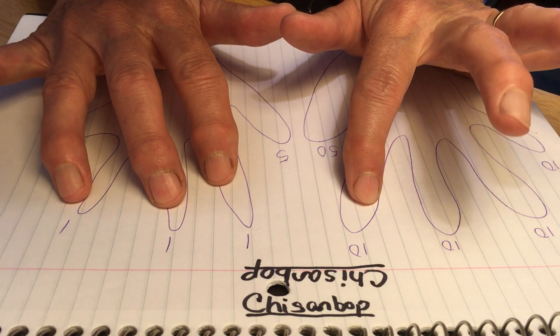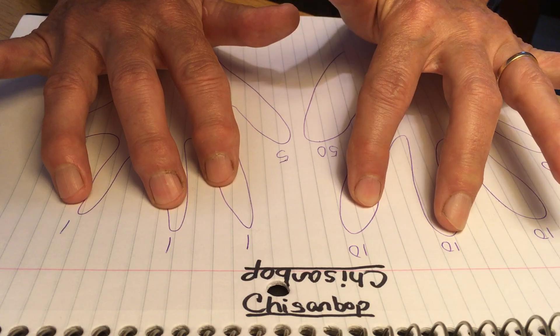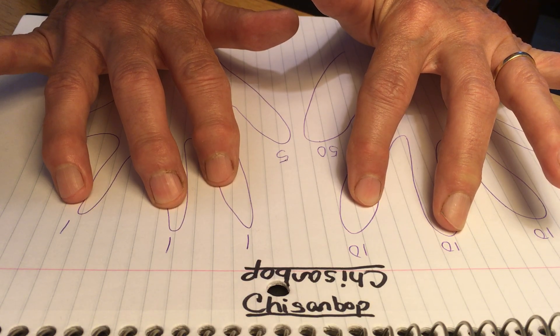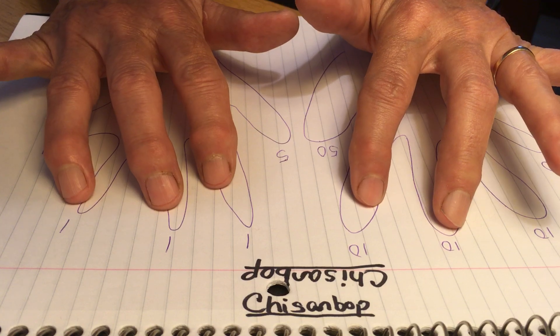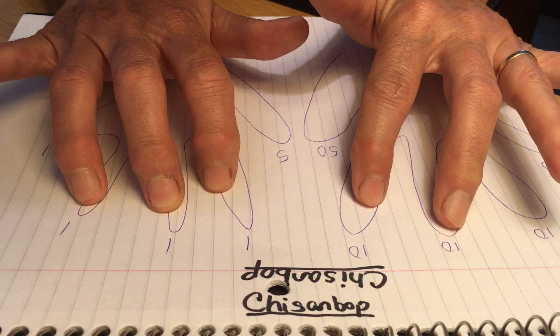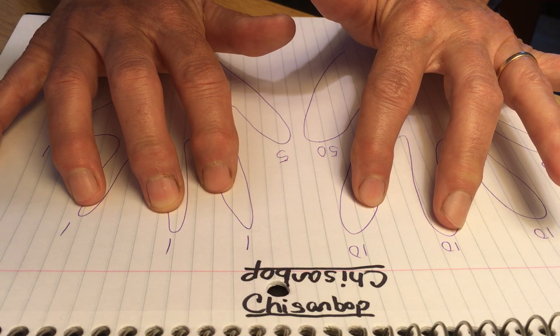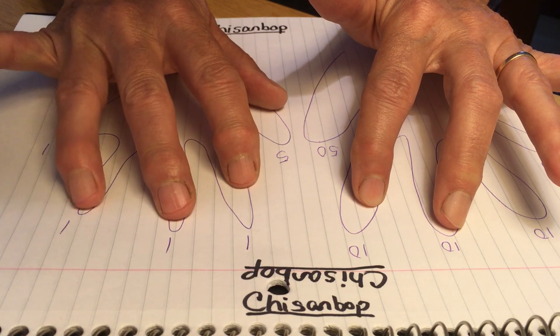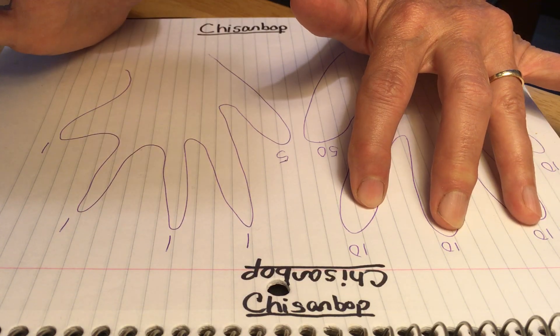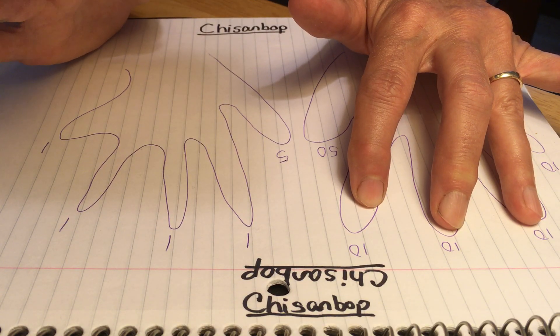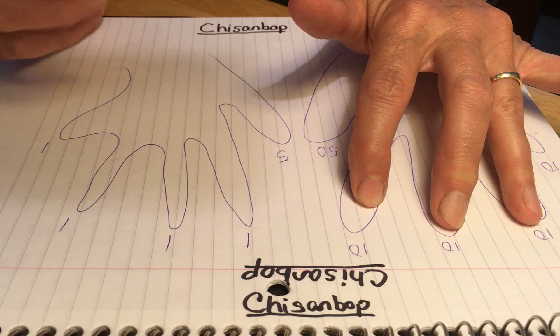Let's say I want to add 17. Well, 17 is 10 plus 7, so here's 10 and now I'm going to do 7 by counting, just using that pattern where my fingers go down and up as I've shown you. So it's 1, 2, 3, 4, 5, 6, 7. So 13 plus 17 is 30.